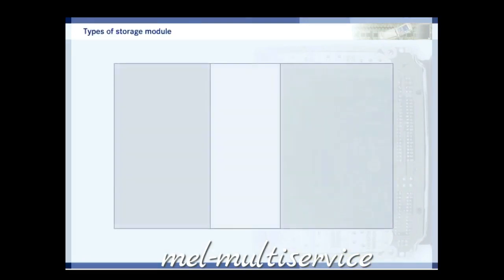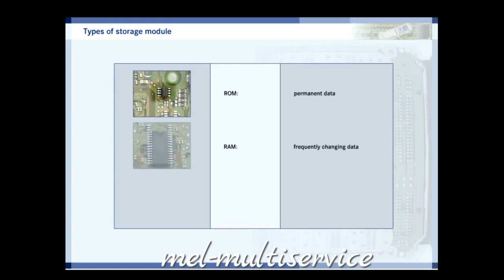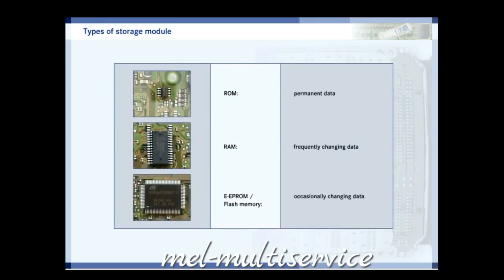Did you notice that there are three types of memory module? First, there are those that contain permanent data. These are called ROM. Then, there are those that contain constantly changing data, such as that which is collected while driving. These are known as RAM. Finally, there are those whose data is only occasionally changed. These are called EEPROM, or flash memory. In the following section, you will learn about how these storage modules work.